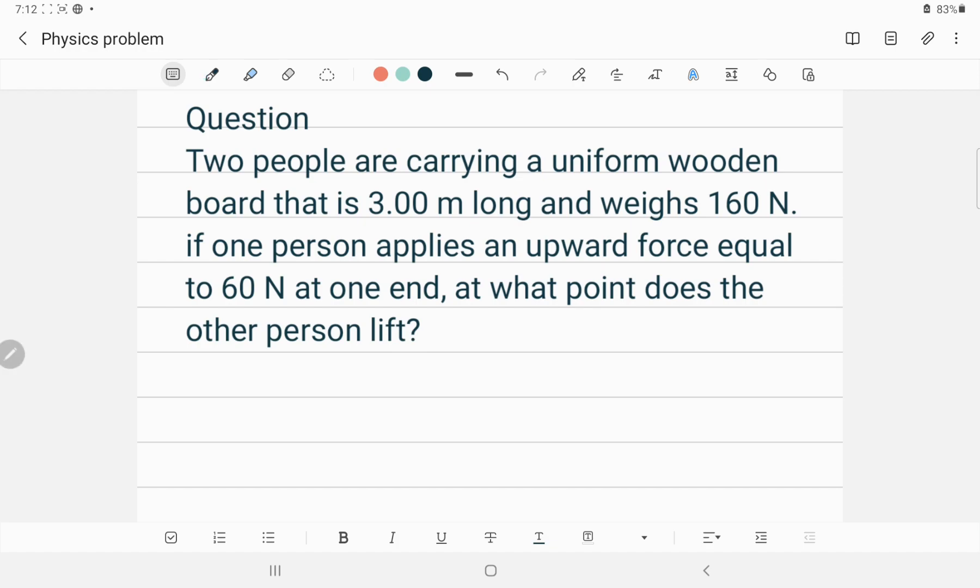The second condition for equilibrium is sum of all the torque acting in the system should be zero. So repeating these two conditions we have sum of all the forces should be zero and sum of all the torques, the second one is torque τ should be zero. So these are two conditions of equilibrium. We will be executing these two conditions in this problem.